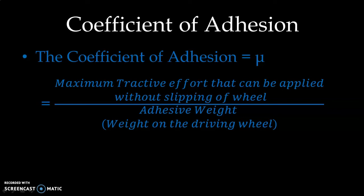With the increase in speed, the coefficient of adhesion decreases. In a very dry rail condition the coefficient of adhesion may be as great as 0.25, and in a greasy condition of the track it may be as low as 0.08. So the force generated depends mainly on the coefficient of adhesion.